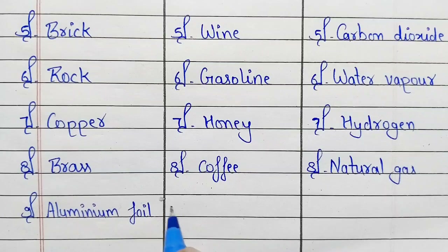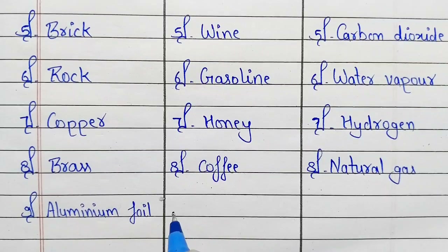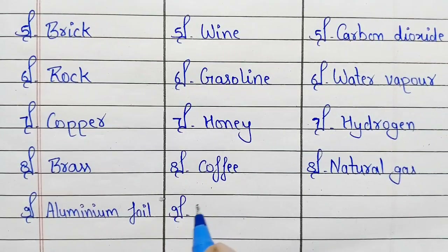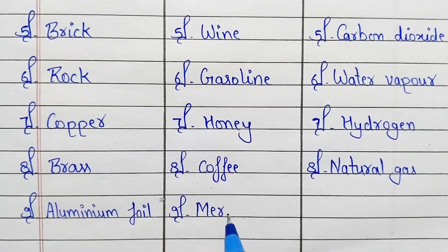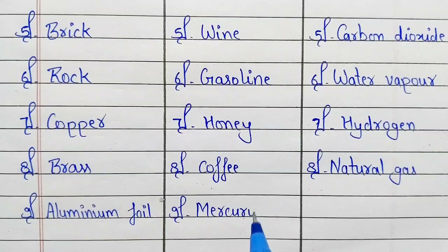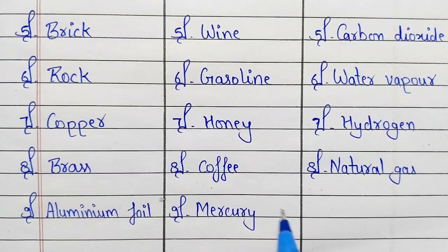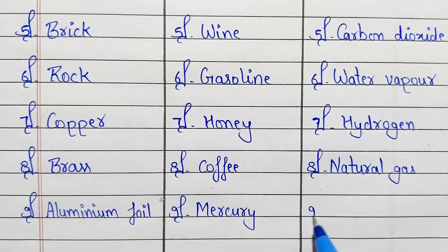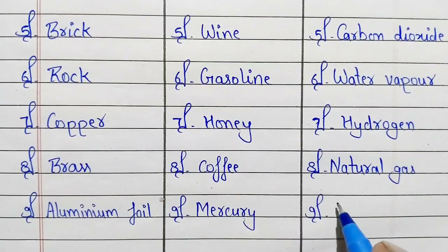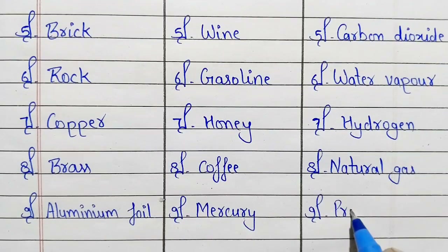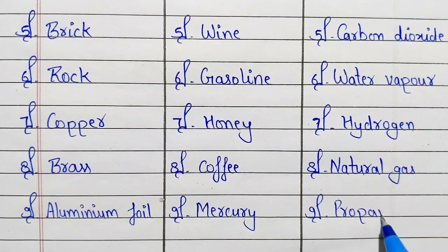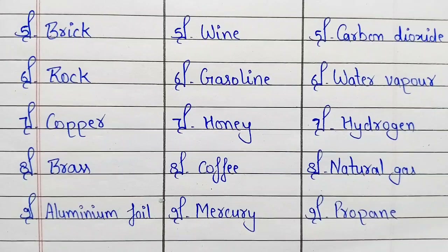Ninth number: solid — aluminum foil. Ninth number: liquid — mercury. Ninth number: gas — propane.